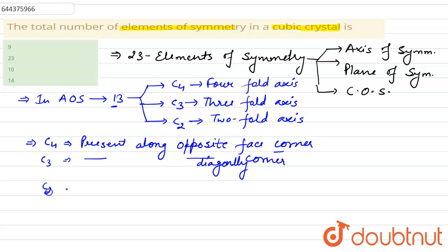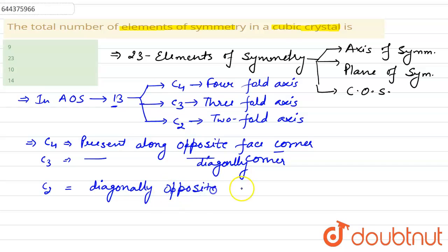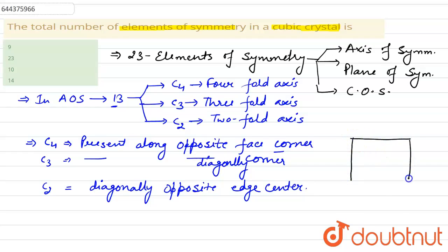C2 axes are present along diagonally opposite edge centers. Now let's make a cube and we will see them one by one.